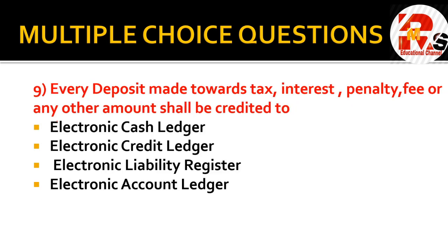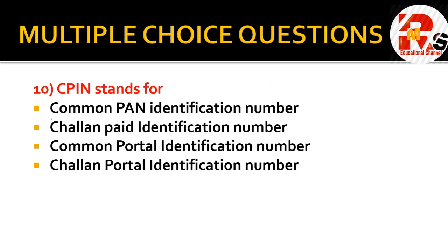Question nine: every deposit made towards tax, penalty, interest, fee, or any other amount shall be credited to — electronic cash ledger, electronic credit ledger, electronic liability register, or electronic account ledger? The right answer is electronic cash ledger. Whatever deposits are made towards any kind of tax, penalties, or interest fees will be credited to the electronic cash ledger.